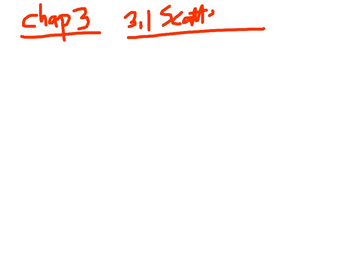So we're going to begin talking about Chapter 3 in this lecture, and we're talking about section 3.1, which is entitled Scatterplots and Correlation.